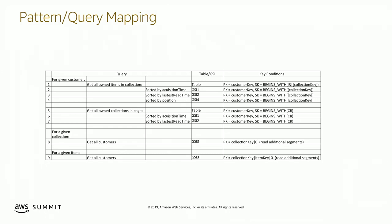Access patterns are distilled from user stories, which make up the requirements of your application. Each user story tells you how you're going to be accessing the data — each one defines the access patterns. You can go through every user story accepted for a given sprint or version of the product and define this exact table to show the team exactly how they're going to be using their data. It's an extremely effective process.